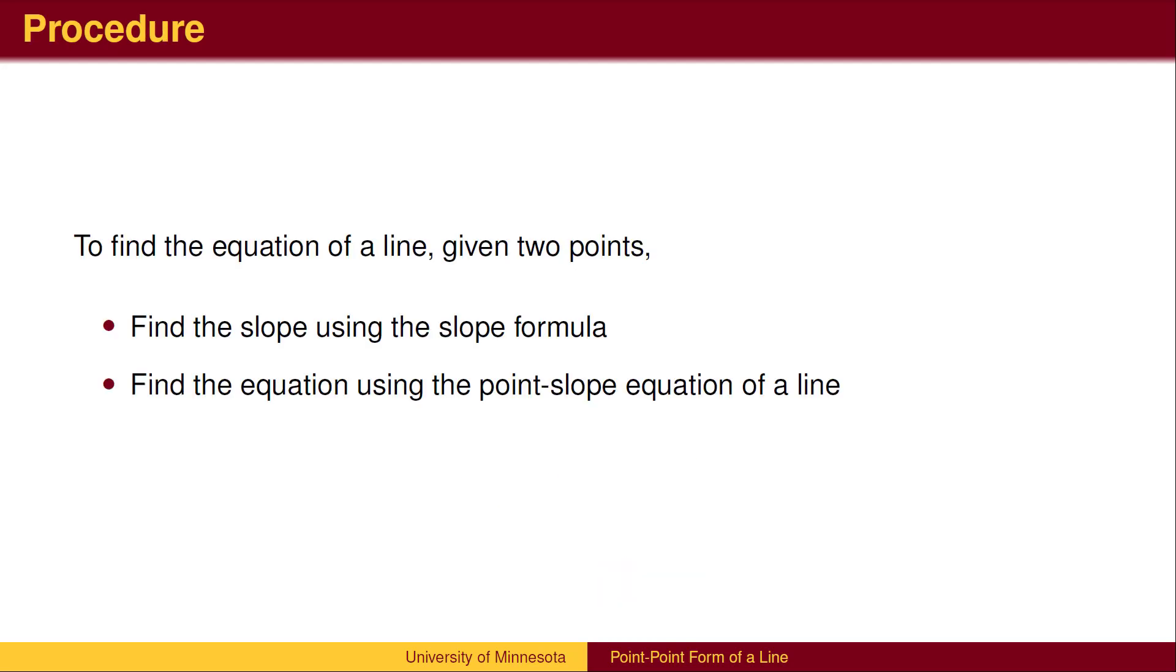To recap, the procedure to find the equation of a line given two points is as follows. First, use the slope formula to find the slope. Then, use either point in the point-slope formula.